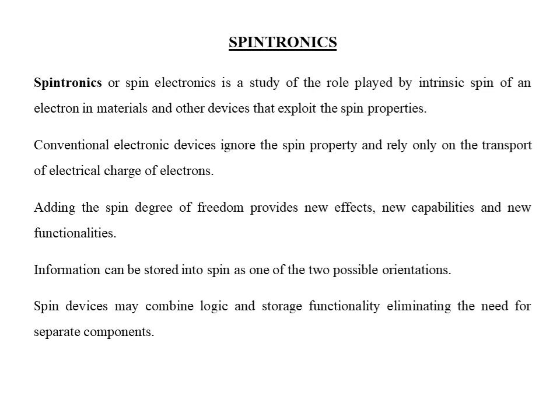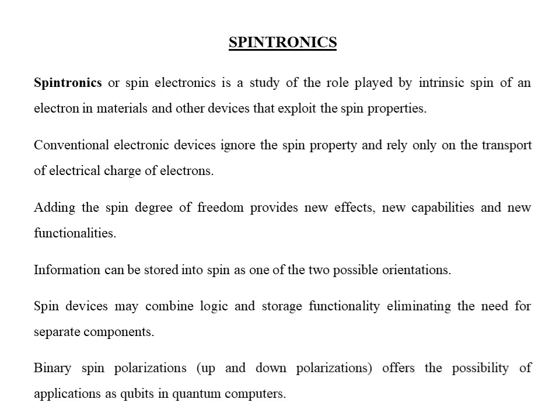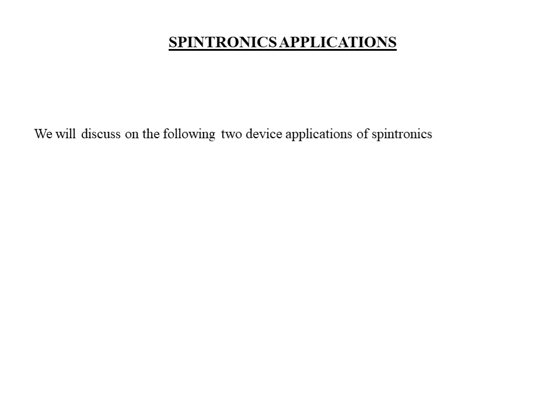We can also think of doing quantum computing with spintronic devices. Computers use binaries — 0 and 1 — for computing. A similar binary can be realized with spin-up and spin-down states of electrons. A computer that performs computing using spin-up and spin-down states as bits is known as a quantum computer. Since the bits used are spin quantum states, these bits are called quantum bits, or in short, qubits.